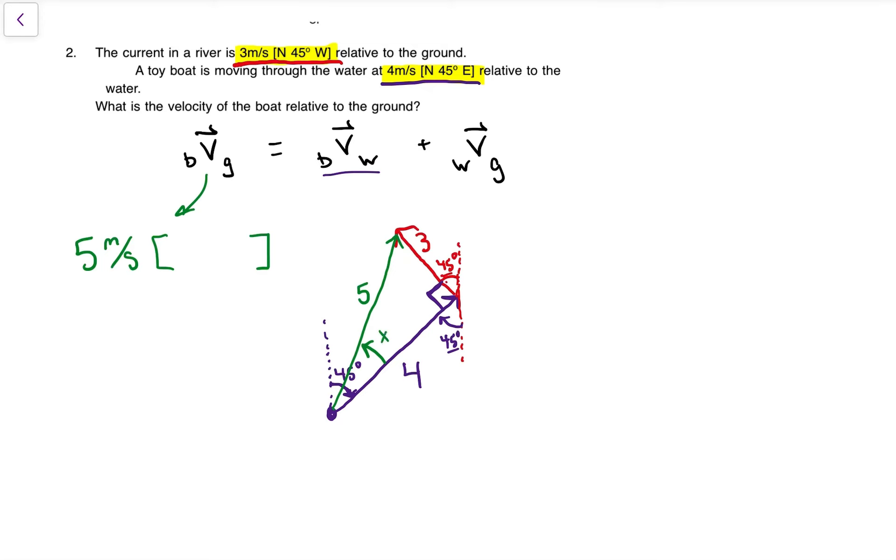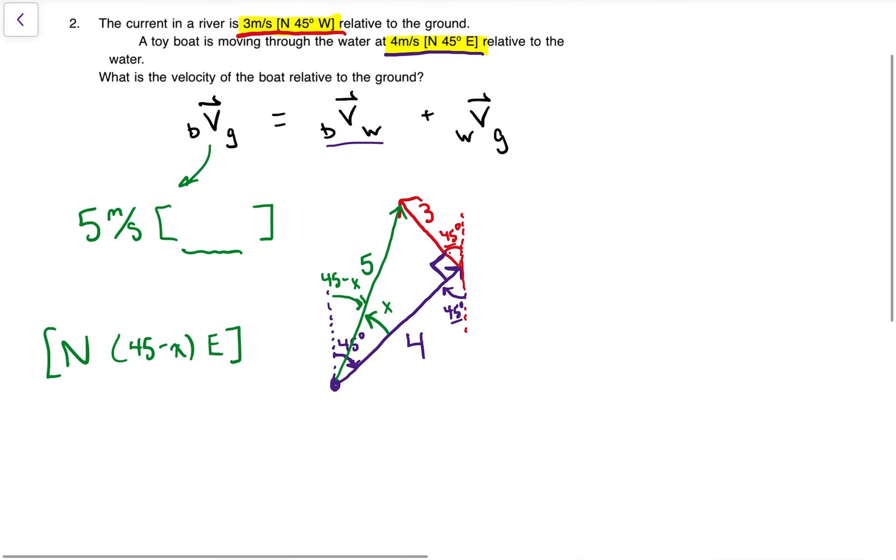That means this angle that I need is going to be, if I use letters, 45 minus X. So my direction, that's going to go in the square brackets, is going to be north, whatever 45 minus X is, angled towards the east. That's some help for the second one.